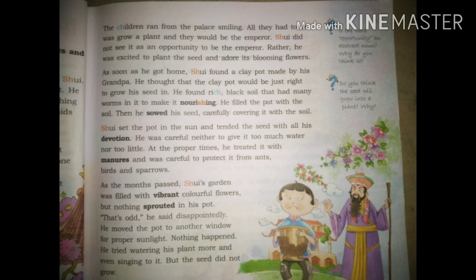As the months passed, Shui's garden was filled with vibrant - means colorful - flowers, but nothing sprouted in his pot. Nothing started to grow in Shui's pot. 'That's odd,' he said disappointedly. He was hopeless because there was no growth. He moved the pot to another window for proper sunlight, but nothing happened. He tried watering his plant more and more, even singing to the plant, but the seed did not grow and the pot remained empty.